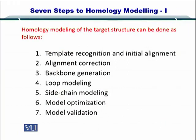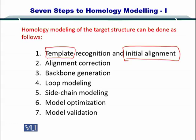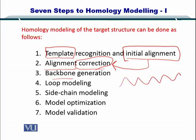Now let's move to the seven steps and briefly go over them. Any homology modeling software in bioinformatics begins by identifying which template is to be used and then performing an alignment. Remember, the template has both the sequence and the structure known. Once the alignment is performed, you may need slight correction by optimizing the gap penalties and mismatches. Once you have finalized the alignment, the next step is to create the backbone of the protein by looking at that alignment.